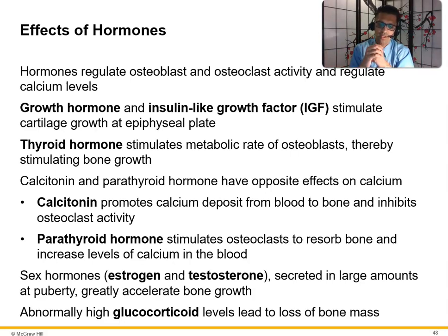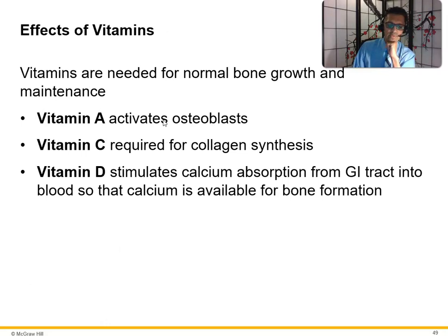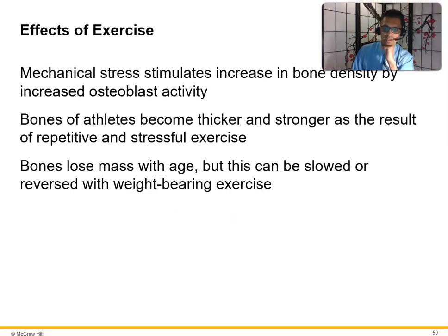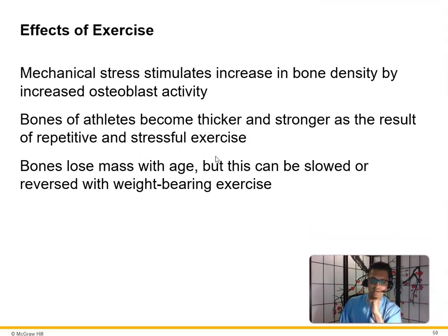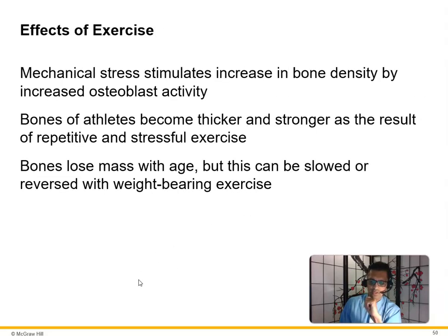Sex hormones such as estrogen and testosterone, secreted in large amounts at puberty, greatly accelerate bone growth. If estrogen levels drop during menopause and osteoclasts are breaking down more bone than osteoblasts are making, that can lead to osteoporosis. Vitamins needed for bone: vitamin A activates osteoblasts; vitamin C is required for collagen synthesis; vitamin D stimulates calcium absorption from the GI tract into the blood. Mechanical stress increases bone density by stimulating osteoblast activity — athletes' bones become thicker and stronger through repetitive exercise.